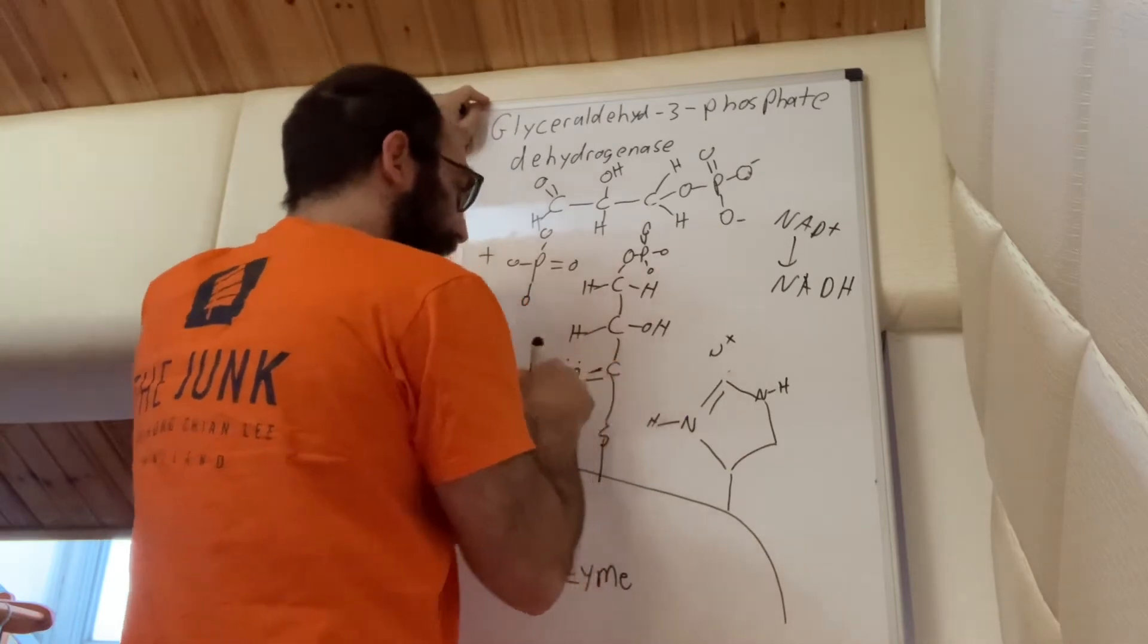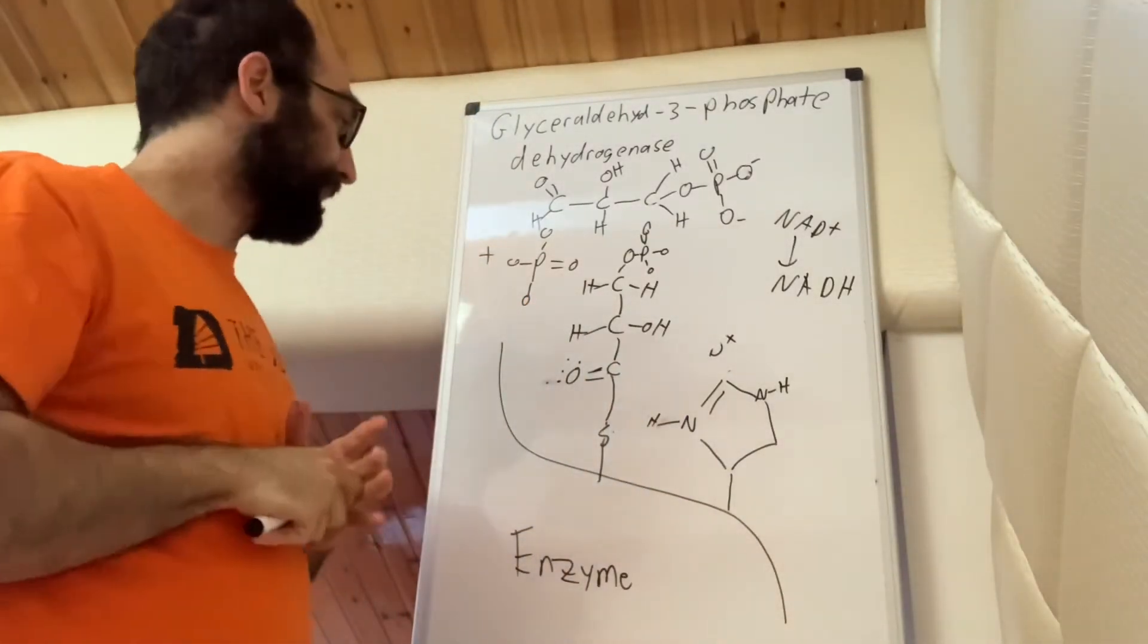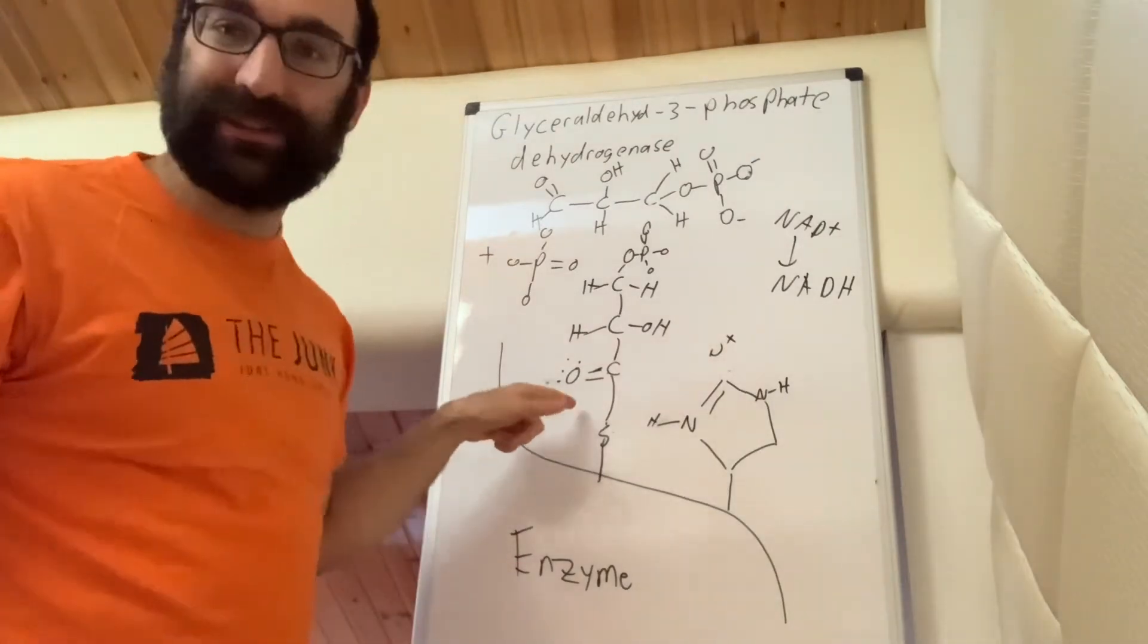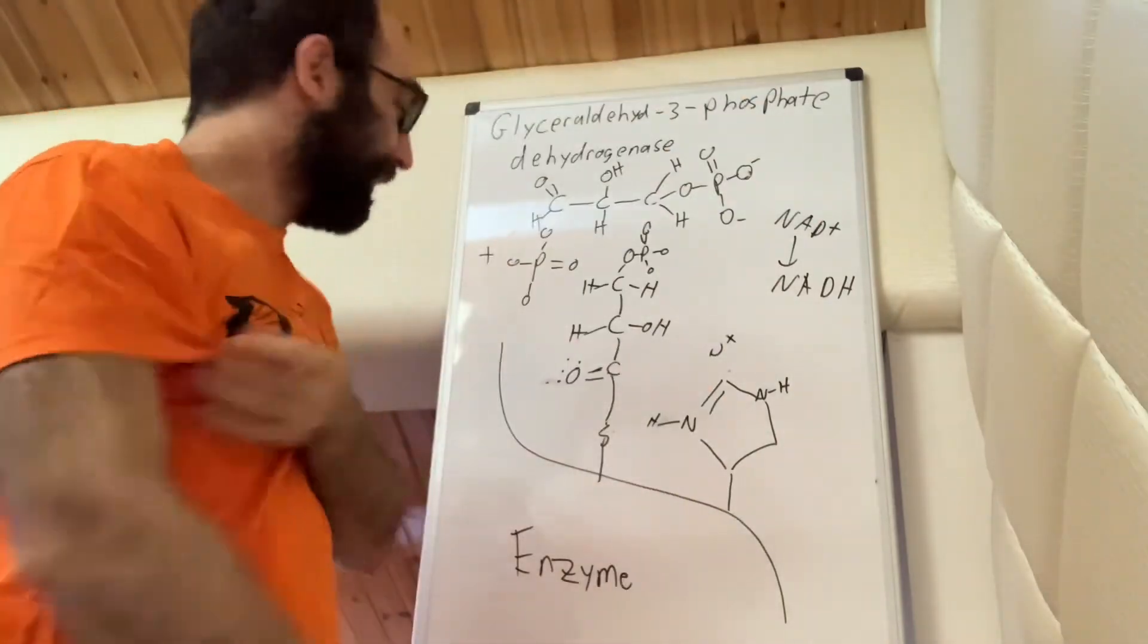Now what we have is we have carbon double bonded to oxygen, and then it's still bonded to this cysteine group off to the side. And eventually this needs to break, right? Because you don't want a giant tail sticking on the end of your enzyme. And then this isn't the exercise.